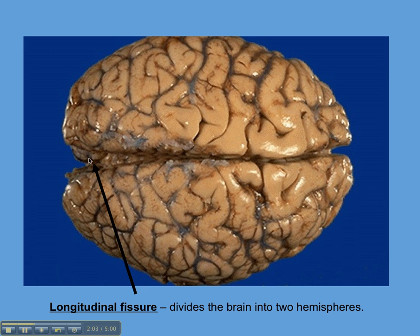It's called the longitudinal fissure because it's running longitudinally and it's quite long. It's a fissure because it's kind of like a valley in the brain. All of these other valleys — if you can see where my mouse is — those are fissures as well, though not as major as this longitudinal fissure. These bumps are called the gyrus, and some of these bumps have special names because they appear in the same places and help us differentiate between the lobes, but we'll go through that later.